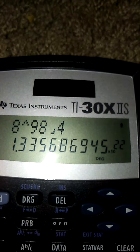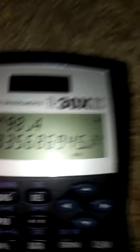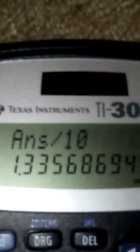You get 1.335686945 times 10 to the 22nd power. So if you want to do this, if you can divide by 10, you get this answer here. It's basically simple except for that one.